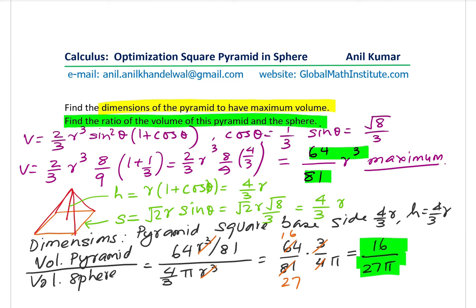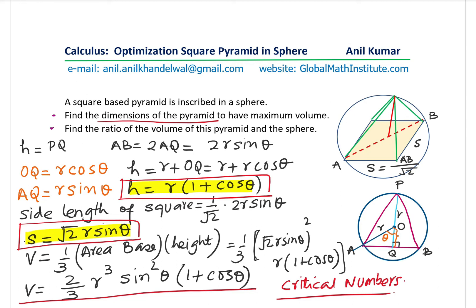I hope with this you understand and appreciate how this question could be solved. The dimensions are: height = 4R/3, side = 4R/3, and the ratio of the volumes is 16/(27π). The idea is to work with the diagonal of the square, find the volume expression, use the first derivative to get the critical number, and then find the maximum volume. Feel free to write your comments, share your views, and if you like and subscribe to my videos, that would be great. Thanks for your time and all the best.